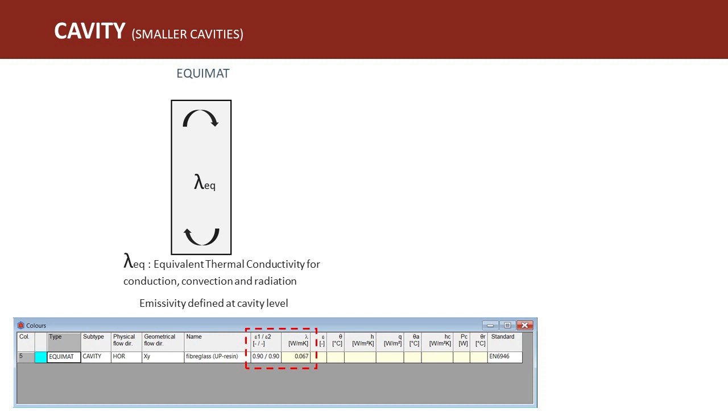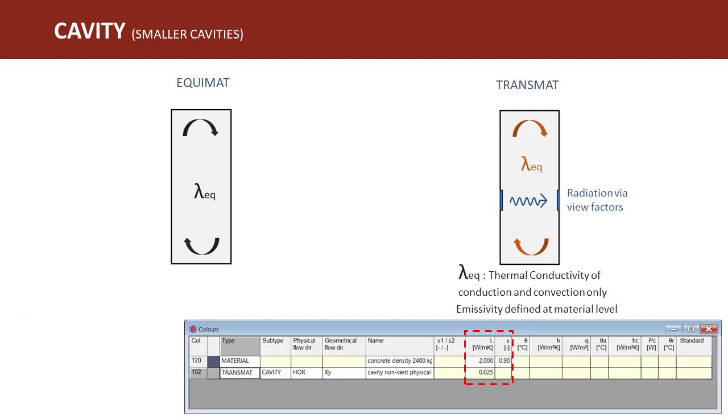Here we input equivalent thermal conductivity, which includes the combined effect of conduction, convection, and infrared radiation. Whereas TRANSMAT is a detailed approach, we calculate detailed infrared radiation. This approach is called radiosity method, where we consider the real geometry and surface emissivities which are defined now at the material level.